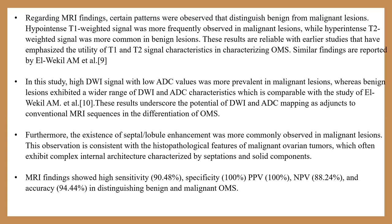These results are consistent with earlier studies. High DWI signal with low ADC values were more prevalent in malignant lesions, whereas benign lesions exhibited a wider range of DWI and ADC characteristics, comparable with previous studies. These results underscore the potential of DWI and ADC mapping as adjuncts to conventional MR sequences in differentiation of ovarian masses. Furthermore, septal and lobular enhancements were more commonly observed in malignant lesions, consistent with histopathological features of malignant ovarian tumors, which often exhibit complex internal structure characterized by septation and solid components.